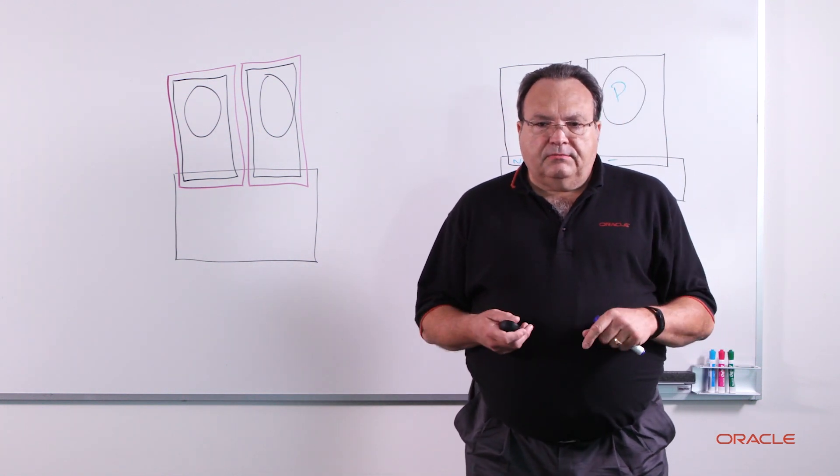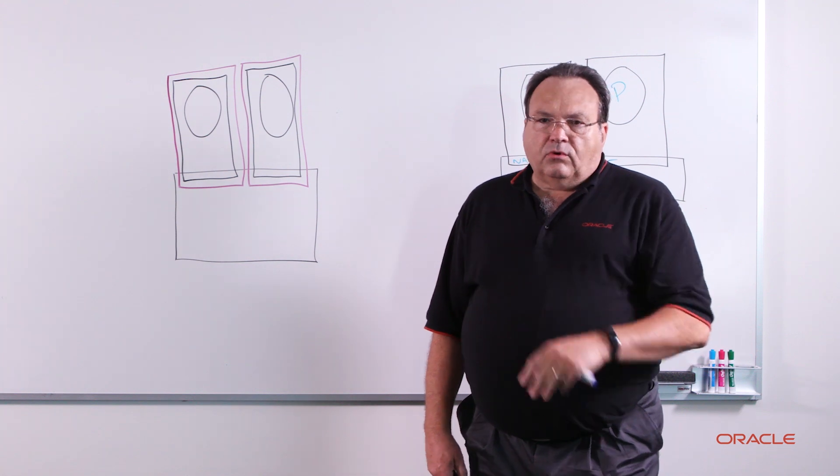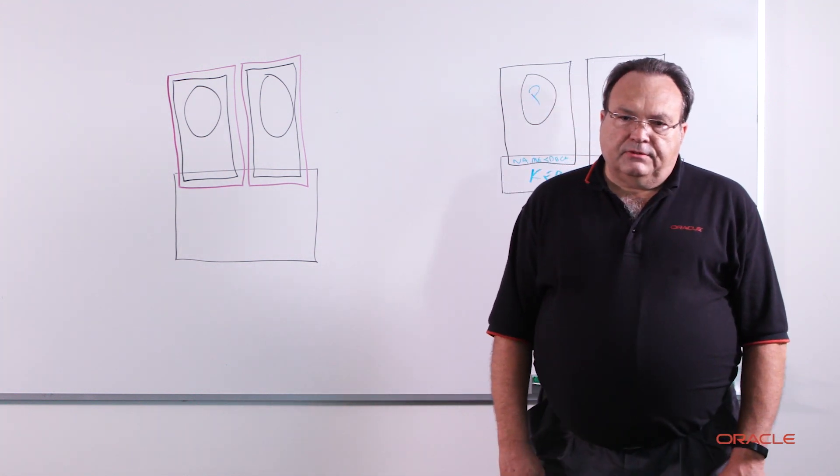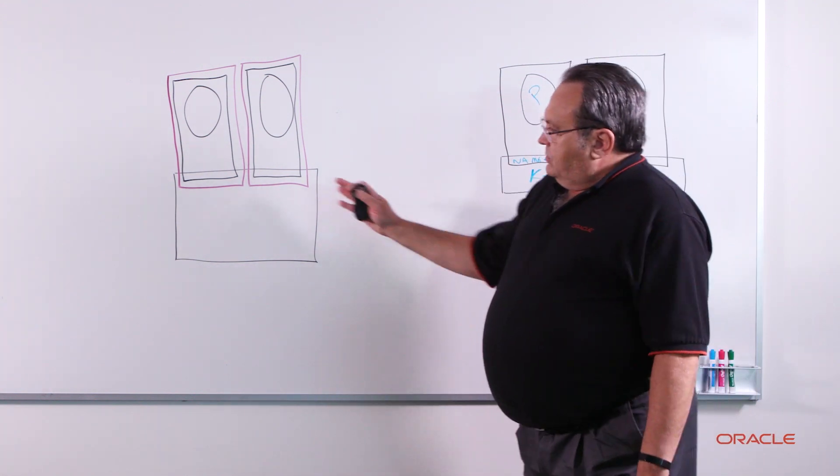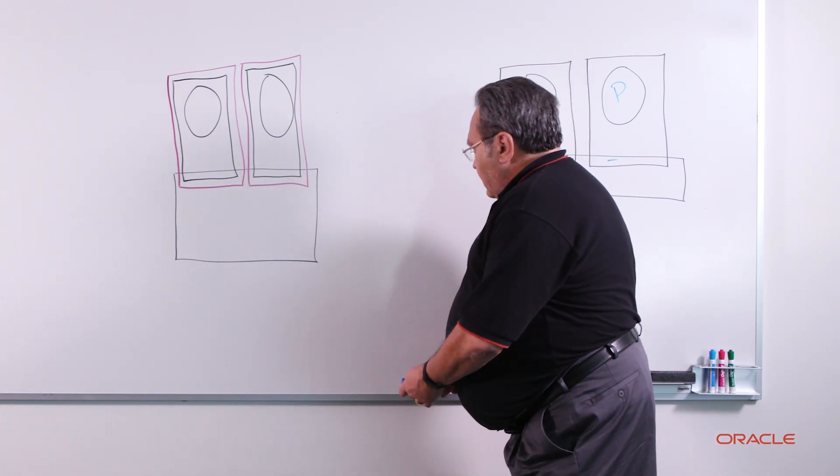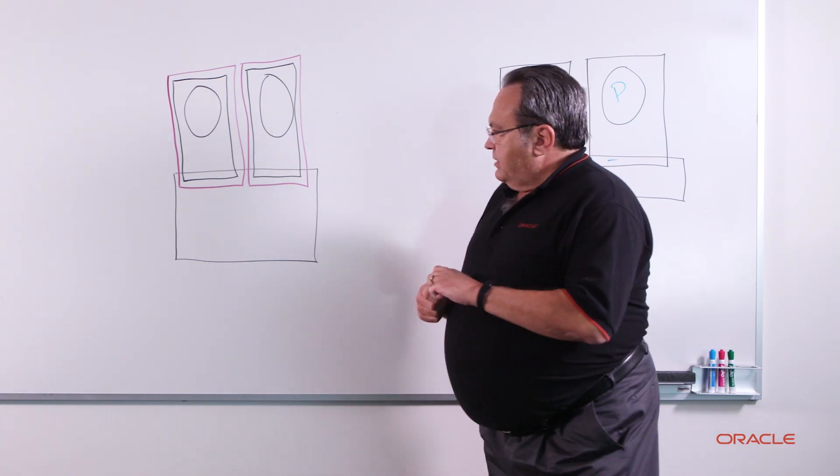It looks just like Run-C. And very importantly, of course, it can be managed by Kubernetes. So if we move over to the following diagram, we're going to talk about how Kata does things.